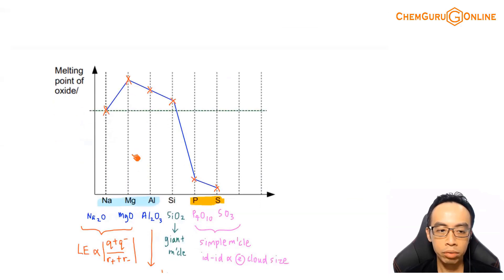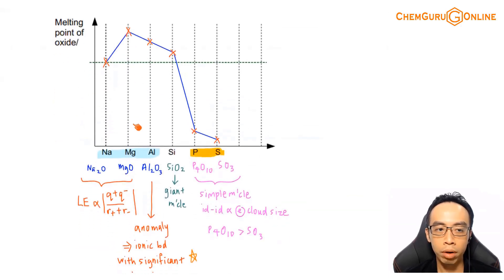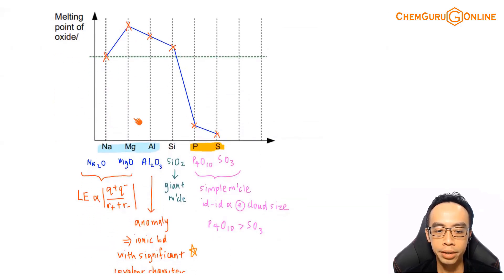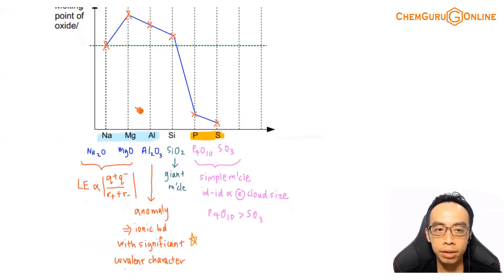Now let us consider melting point. Melting point for oxides — the trend is here.